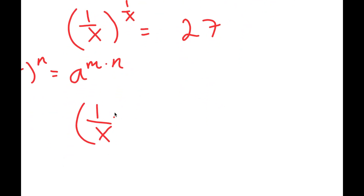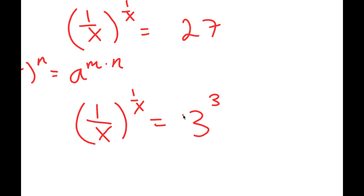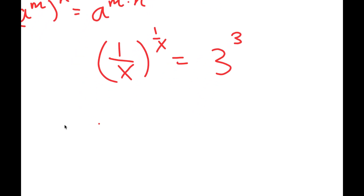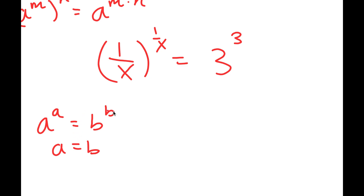Now I'm going to rewrite 27 as three to the power of three. And if I have something in the form a to the power of a is equal to b to the power of b, this means that a is equal to b. So in this case, I have one over x to the power of one over x equals three to the power of three, which means that one over x is equal to three.